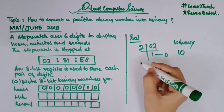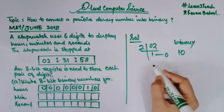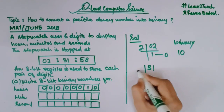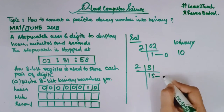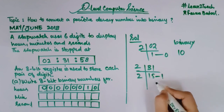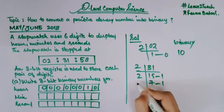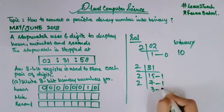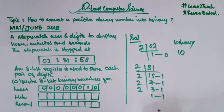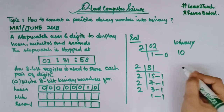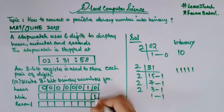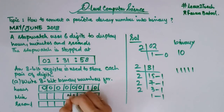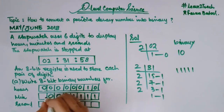Moving towards minutes, I have 31. Taking the LCM of 31 by 2: 31 by 2 gives 15 remainder 1; 15 by 2 gives 7 remainder 1; 7 by 2 gives 3 remainder 1; 3 by 2 gives 1 remainder 1; remainder 1 at the end. These give five 1s. Writing into the register: 00011111. The remaining bits are 0.